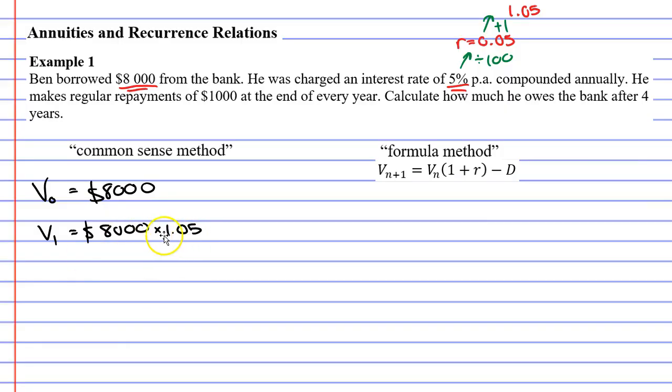So we're going to take our 8,000 and we're going to times it by 1.05, because that will increase 8,000 by 5%. So we're also told that he makes regular repayments of $1,000 at the end of every year. And this is actually quite important. If it had said that they do it at the beginning of every year, then you would have actually subtracted your repayment of $1,000 at V0. So we're going to subtract our repayment at V1, because V1 represents the end of year 1.